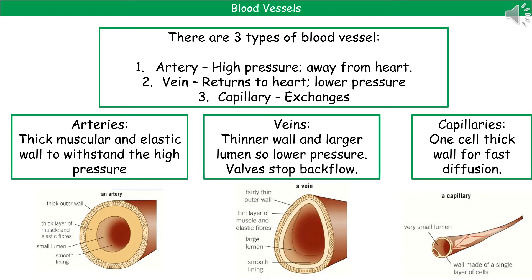We have three types of blood vessels to remember. The artery, which is under higher pressure and carries blood away from the heart. The vein, which returns blood to the heart and is under lower pressure. And the capillaries, which are where the exchanges take place. Arteries have a thick muscular and elastic wall to withstand the high pressure. Veins have a thinner wall and larger lumen and lower pressure, and have valves to avoid backflow of blood. Capillaries are only one cell thick to allow for fast diffusion.